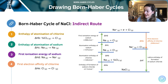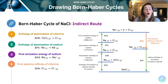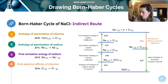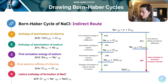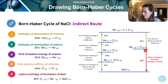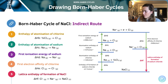Then we have the first electron affinity. Remember that the first electron affinity is exothermic, because it's more stable gaining that electron and so energy is released — the value is -349. And finally, we have the lattice enthalpy of formation: gaseous ions forming one mole of the solid ionic compound.